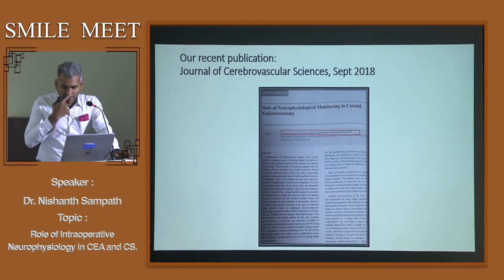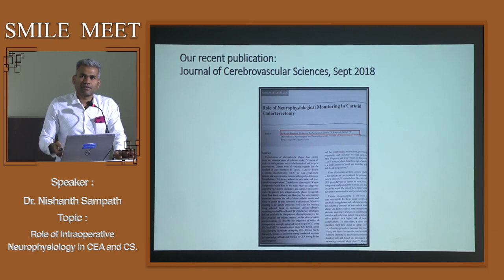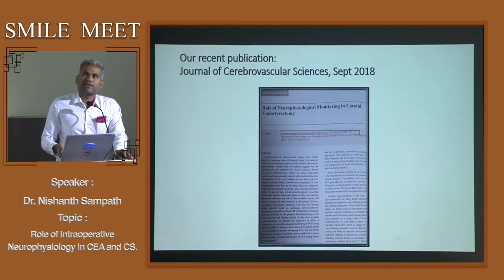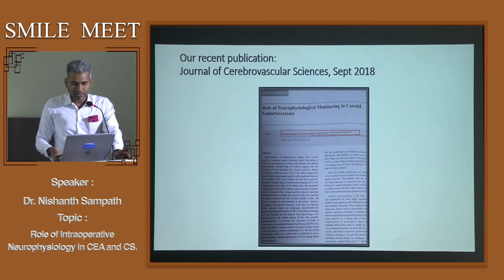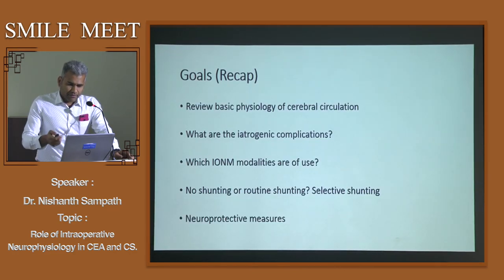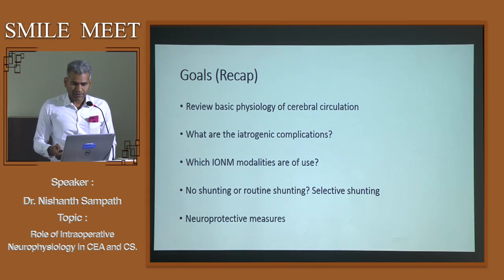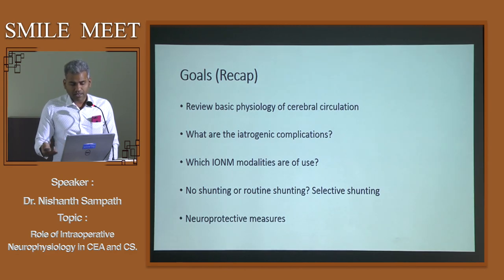We recently published our case series — our experience over the last three years covering about 15 patients under complete neuromonitoring cover — in the Journal of Cerebrovascular Sciences, the official journal of the Cerebrovascular Society of India. In recap: we reviewed basic physiology of cerebral circulation, discussed iatrogenic complications, discussed modalities of use, how they guide selective shunting, and how they guide initiation of neuroprotective measures. Thank you.